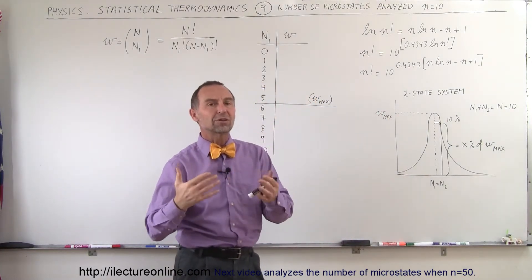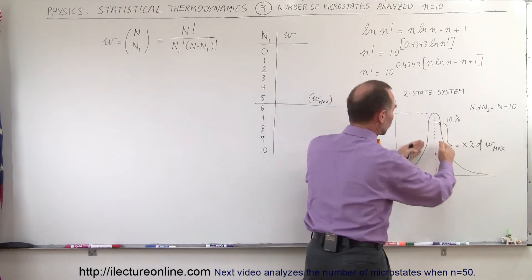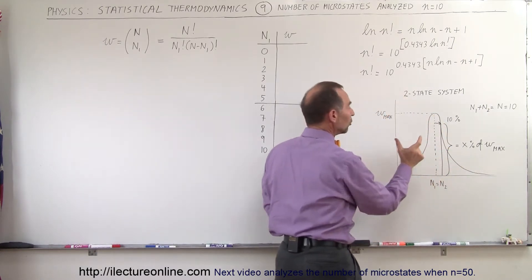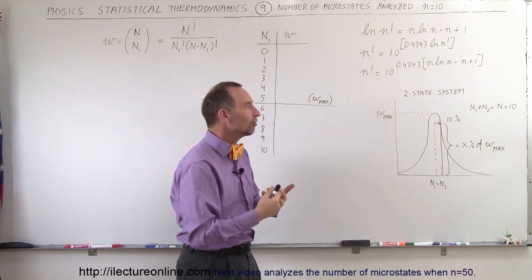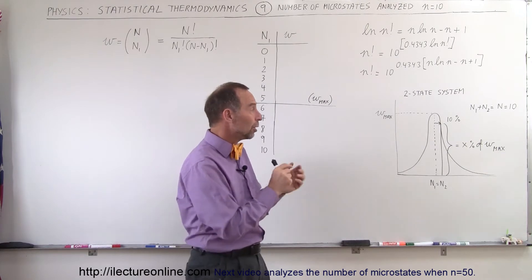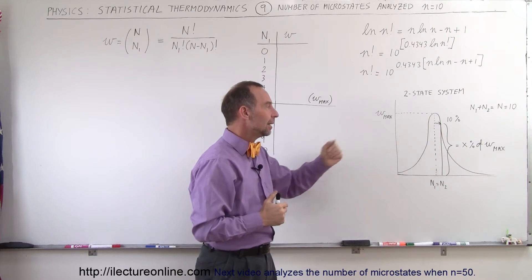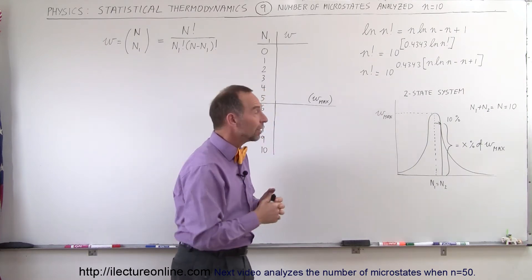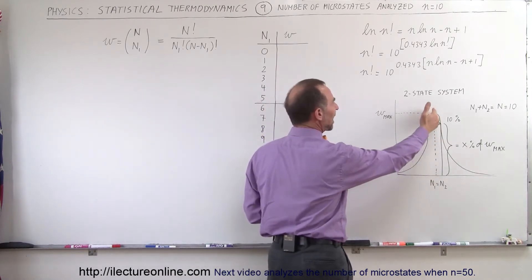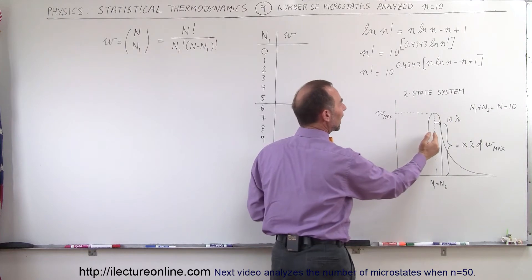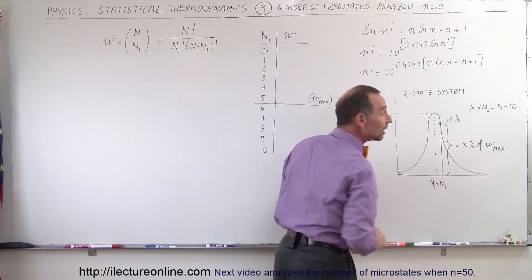Later on we'll do some videos with a multi-state system, but we start out with a simple system. We also want to know what the general shape looks like. The width of this shape will depend upon the value of n — the number of objects. When the number of objects increases to a large number, the distribution tends to become narrower. If the number of objects decreases, it tends to widen. We're going to find the maximum number of microstates and how much it deviates from the maximum when we're 10% away from the point where n1 equals n2.